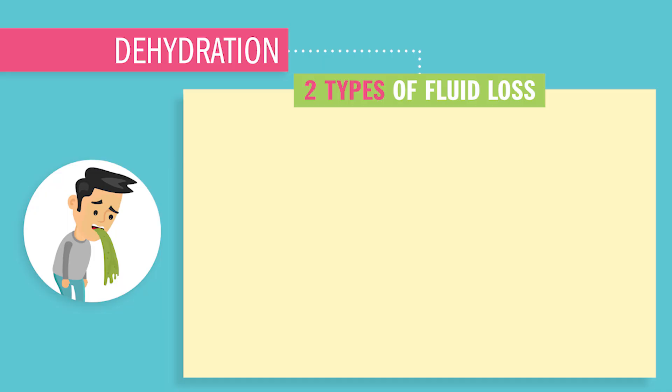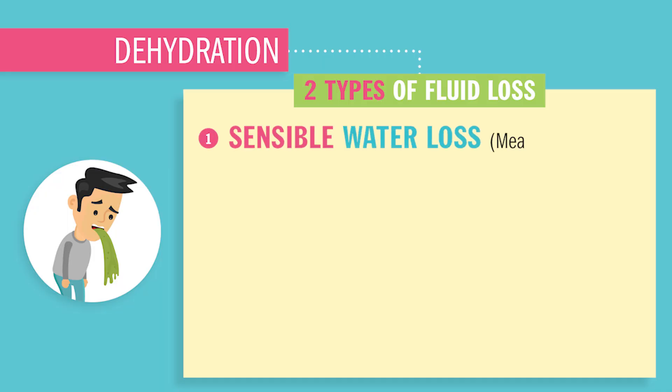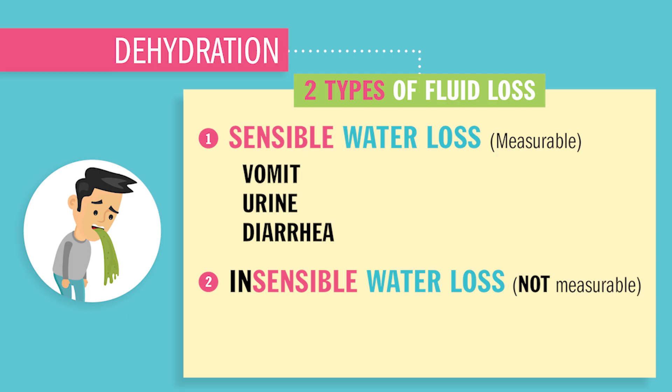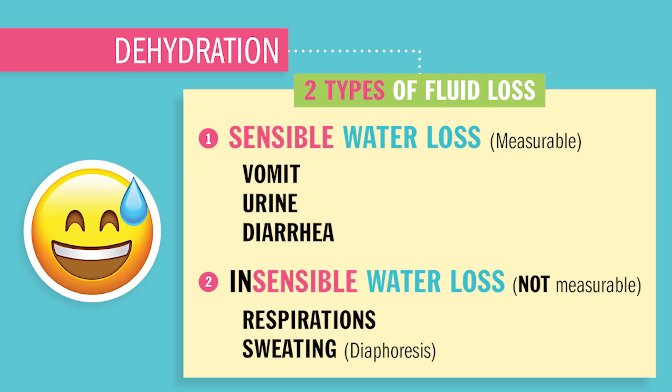Now let's go over some causes of dehydration. Fluids can leave your body in many different ways — your body excretes fluids in different forms. There are two kinds of fluid loss: sensible water loss, which is fluid loss we can measure like vomiting, urination, or diarrhea; and insensible water loss, which is water we cannot measure, like respirations or profound sweating, also called diaphoresis.